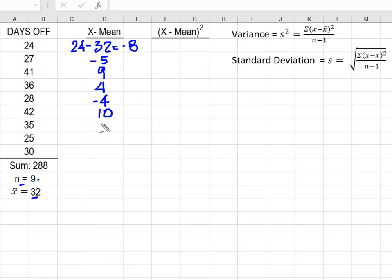I have 3. Remember, 25 minus 32 is going to give me a negative 7. 30 minus 32 is going to give me a negative 2.